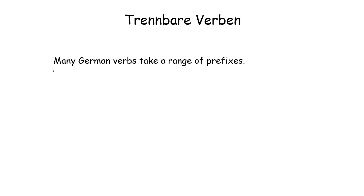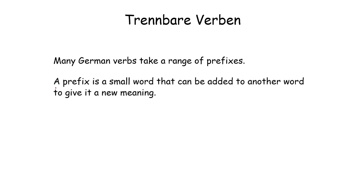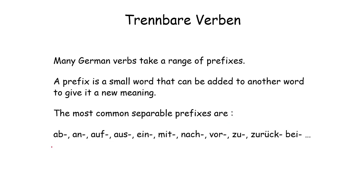Separable verbs. Many German verbs take a range of prefixes. A prefix is a small word that can be added to another word to give it a new meaning. The most common prefixes are: ab, an, auf, aus, ein, mit, nach, vor, zu, zurück, and bei. These are the most common prefixes that add to verbs and give them a new meaning.